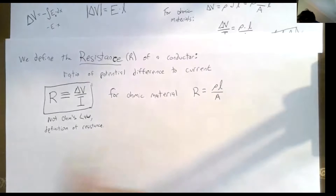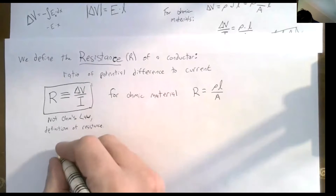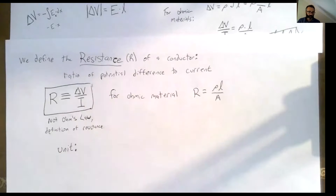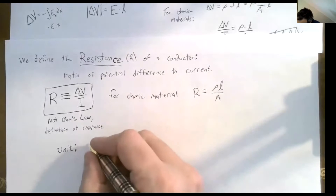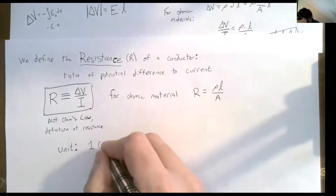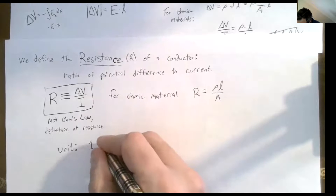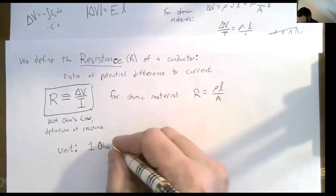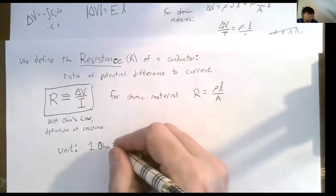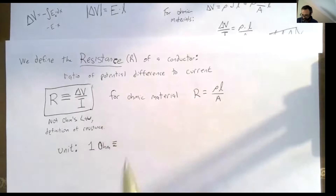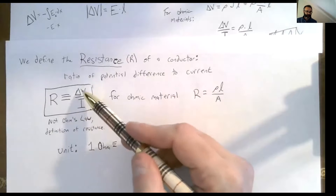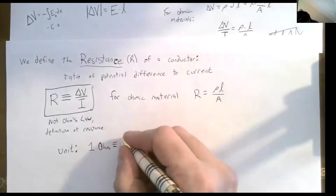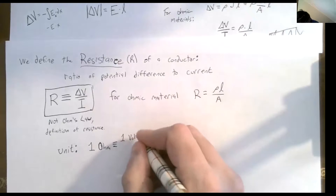The unit for resistance is ohms. Resistivity has units of ohm-meters. One ohm is defined to be one volt per amp.